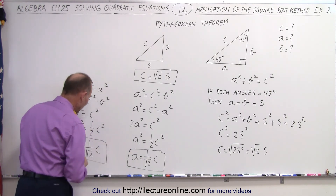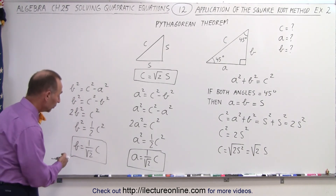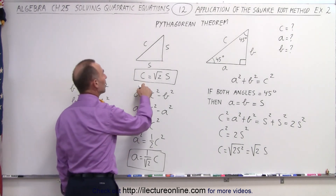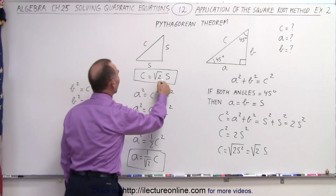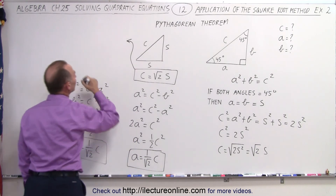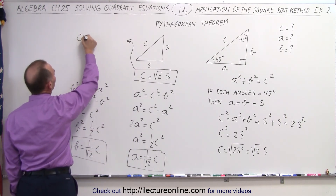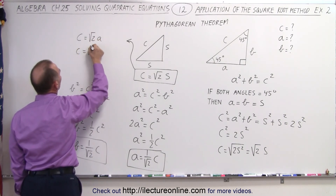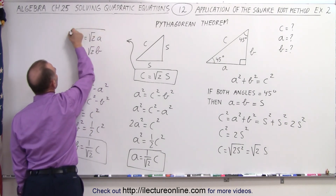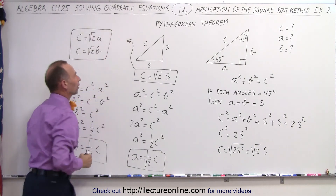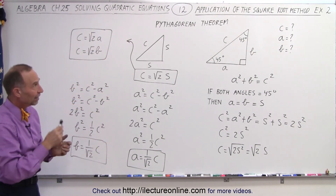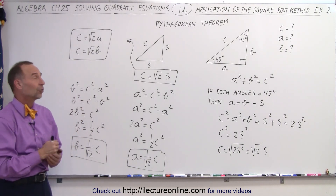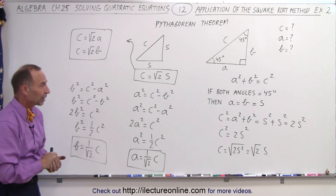So you can see that both A and B are equal to each other. They can both be expressed in terms of C as 1 over the square root of 2 times C. If I want to solve for C, it is equal to the square root of 2 times S. Or, if I want to express it in terms of A and B, I can write that C is equal to the square root of 2 times A, or C is equal to the square root of 2 times B. And that's how we use the square root method to solve for something familiar — the right triangle, or the Pythagorean theorem, where both of the other two angles equal 45 degrees.